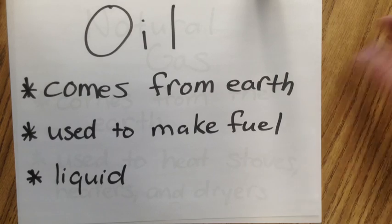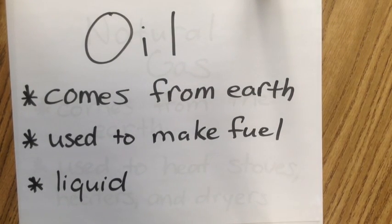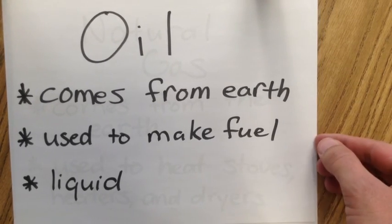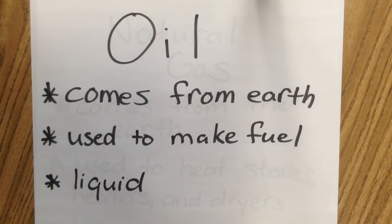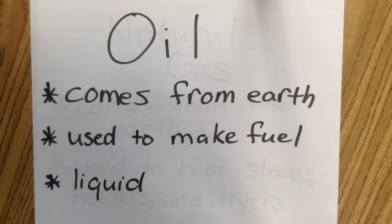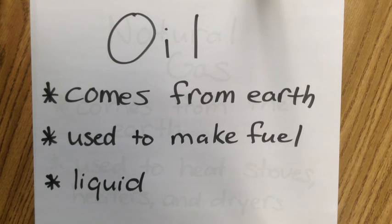Another fossil fuel is oil, which also comes from the ground. Big machines pump it up out of the ground — a lot of it is in the Middle East, Europe, Asia, Canada, and parts of the United States. We use oil to make fuel — the gasoline that goes into cars, buses, airplanes, and boats. Oil is a liquid, so we have coal, which is a solid, and oil, which is a liquid.